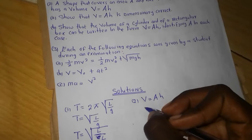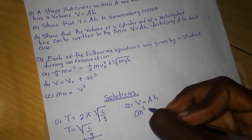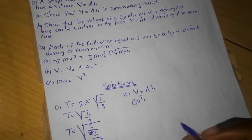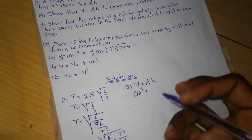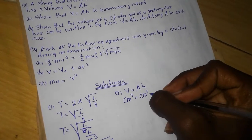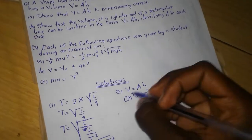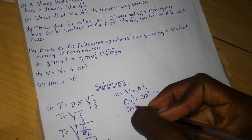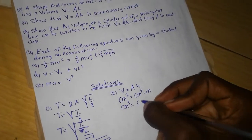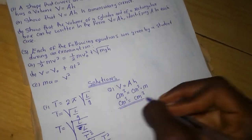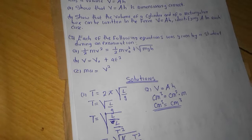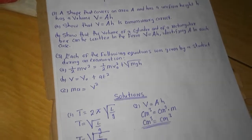The units of volume are simply meters cubed. The units of area are centimeters squared and the units of height are simply meters. When you multiply these together you get the same unit on both sides — the two are equal. Therefore you are able to say these values are dimensionally correct.